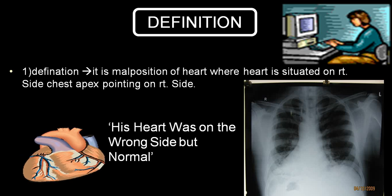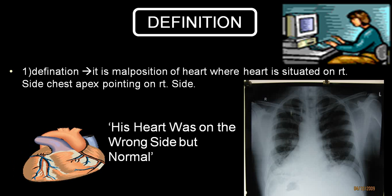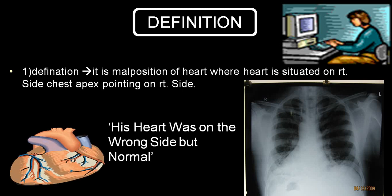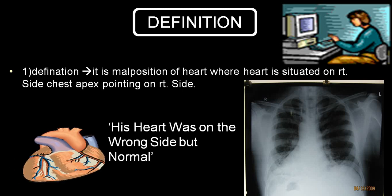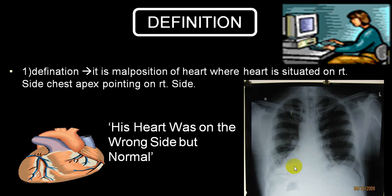Meaning it is a mirror image of normal position. Normal position is called levocardia — just the opposite. On the right side we call it dextrocardia. If the entire mediastinum is pushed or pulled towards the right side, that is called dextroposition — that is not dextrocardia. So it is a rotation of the heart on a vertical axis, and the apex points towards the right side.